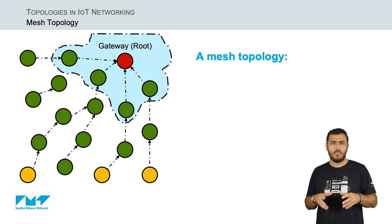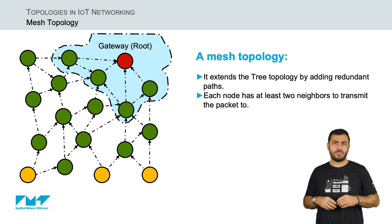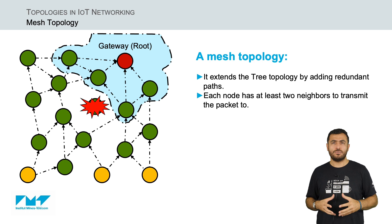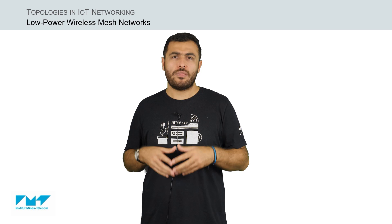Finally, we have the mesh topology. It is an extension of the tree topology to which one has added redundant paths. Each node in the network has at least two neighbors to transmit the data packet to. As a result, the mesh topology overcomes the limitations of the tree topology, and even if some of the nodes go off, it will neither impact the multi-hop network nor the traffic flow.